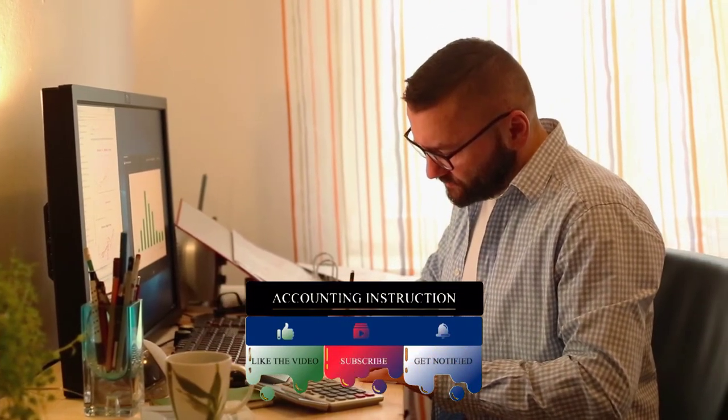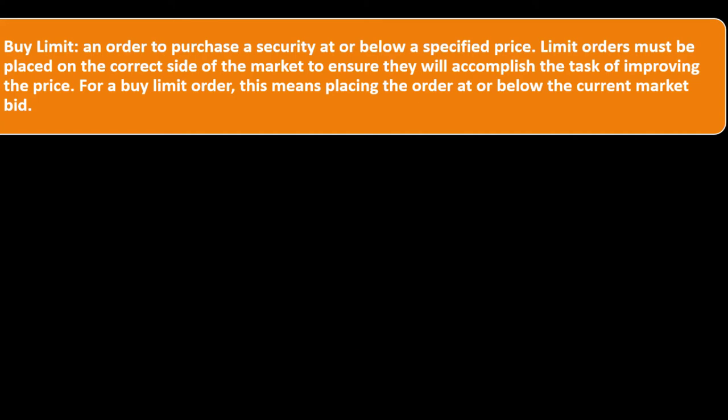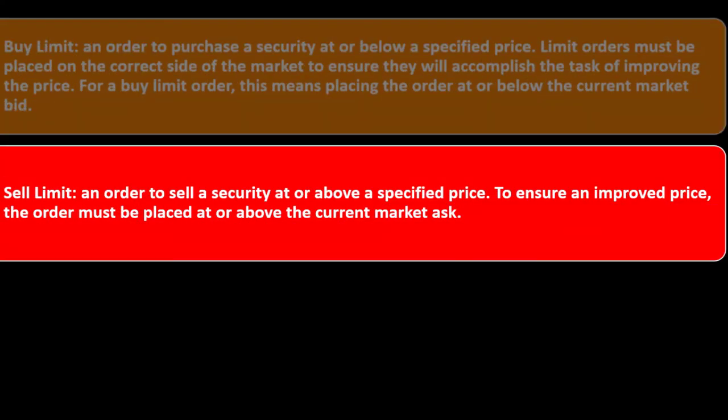There are four types of limit orders. A buy limit order purchases a security at or below a specific price — it must be placed at or below the current market bid to improve the price. A sell limit order sells a security at or above a specified price — to ensure an improved price, the order must be placed at or above the current market ask.